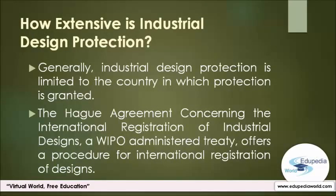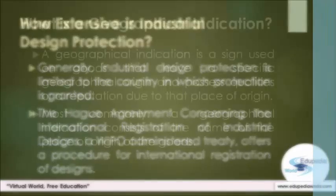How extensive is industrial design protection? Generally, industrial design protection is limited to the country in which protection is granted. The Hague Agreement concerning the International Registration of Industrial Designs, a WIPO-administered treaty, offers a procedure for international registration of designs. Applicants can file a single international application either with WIPO or the national or regional office of a country party to the treaty, and the design will then be protected in as many member countries as the applicant designates.